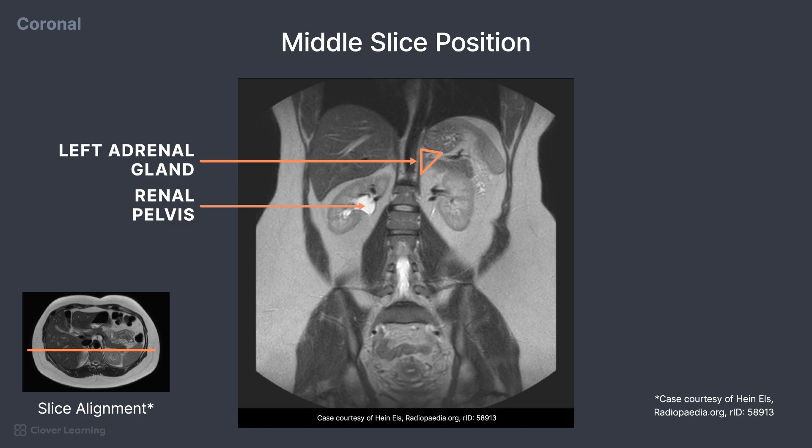Near the kidneys, just to the right and left of the spine, are two grey straight lines which are known as the crura of the diaphragm. We can also see a small portion of the spleen start to emerge.